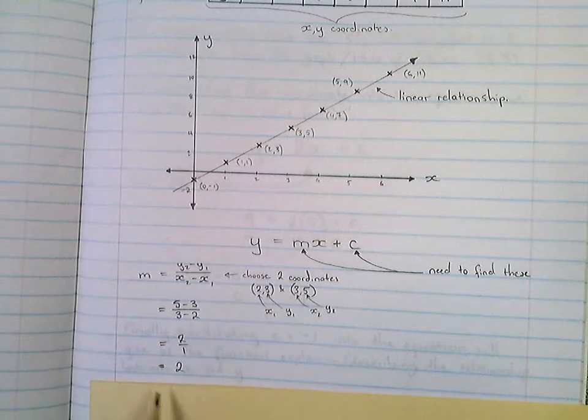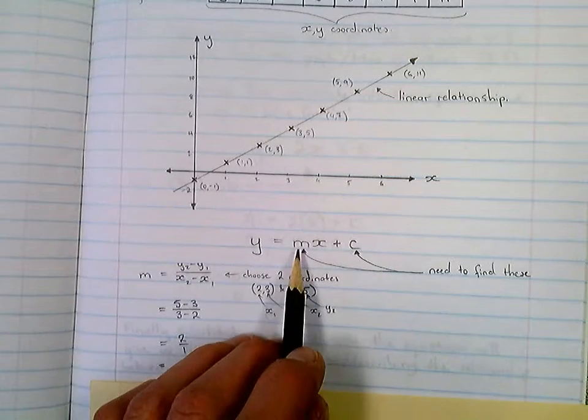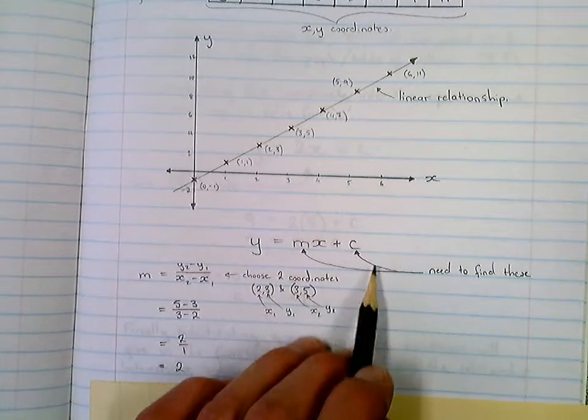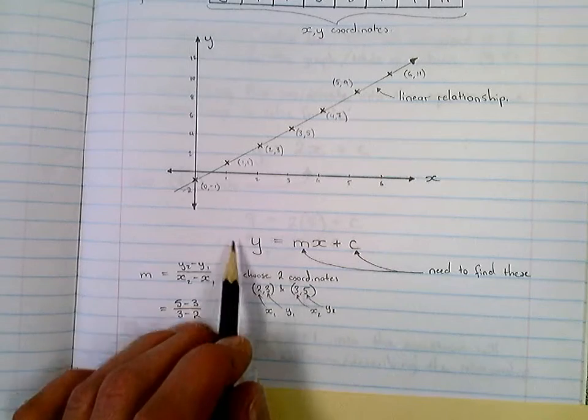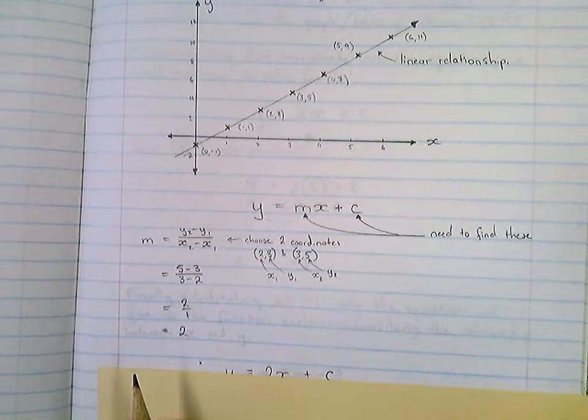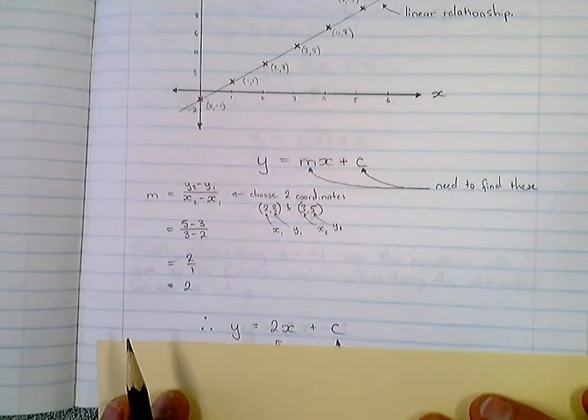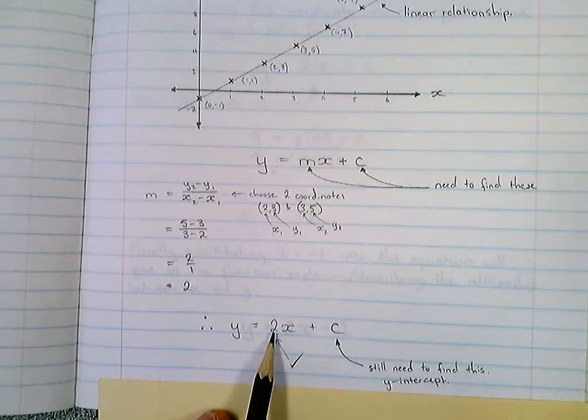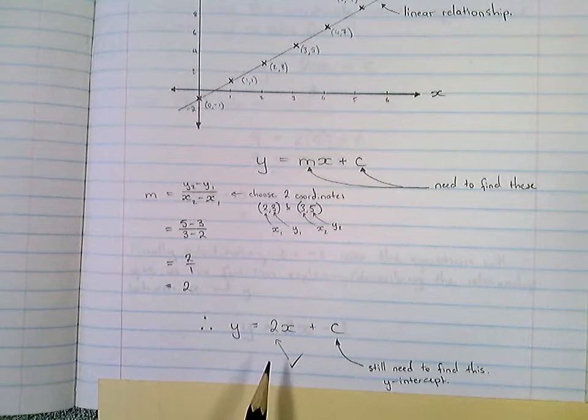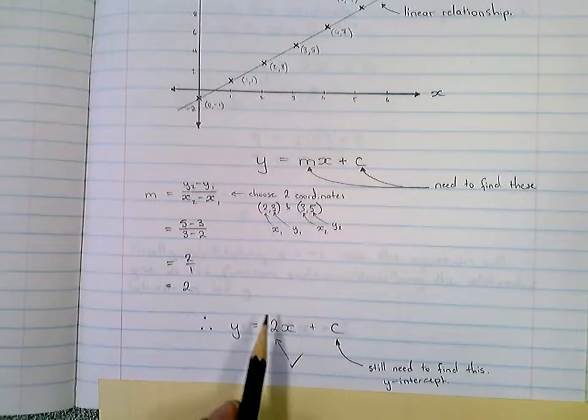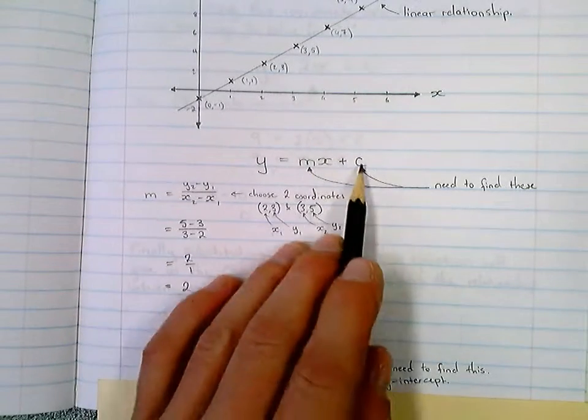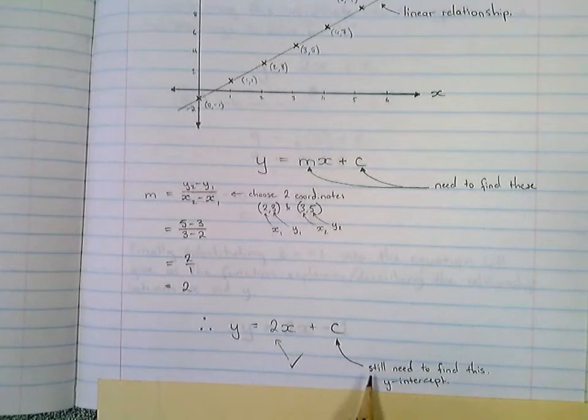Once I've got m equal to 2, I can then put it back into this general form for a straight line, so I'll then get y equals 2x plus c. Now I've noted this 2 was m, and I put a tick because I've done that, I've found that one. But like I said, I need to find two things. I've found this one, I need to find c still, so I've just suggested. Still need to find this, it's the y-intercept.